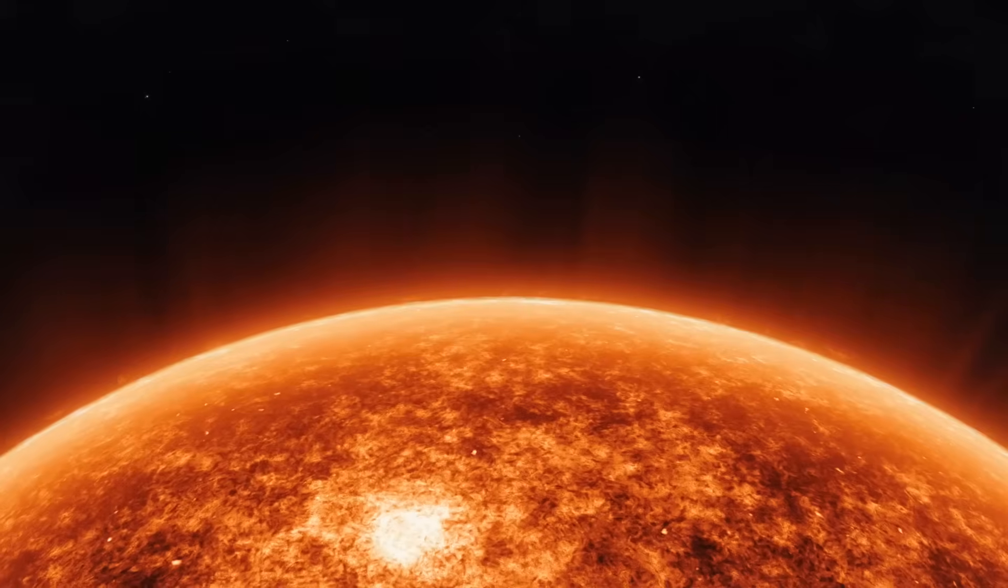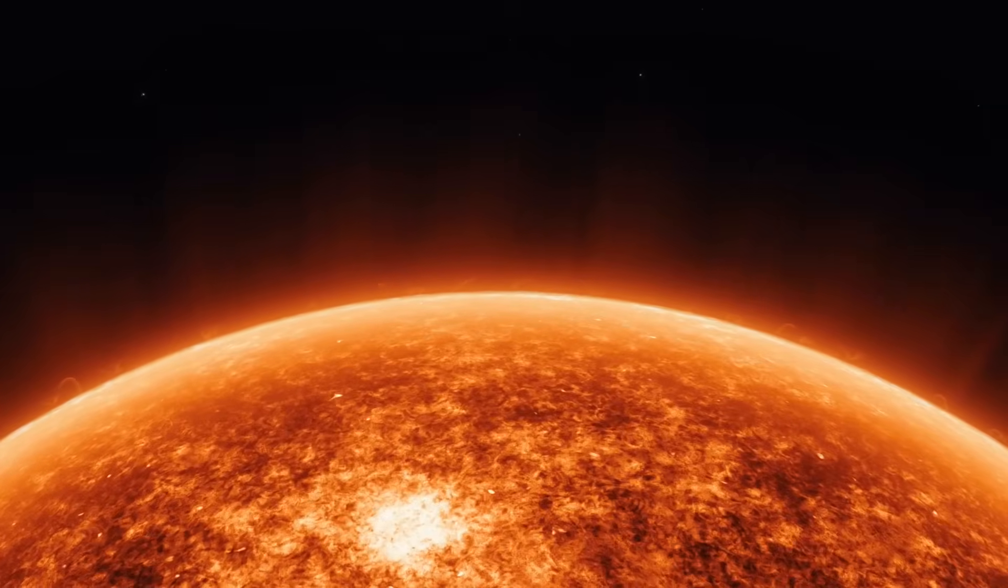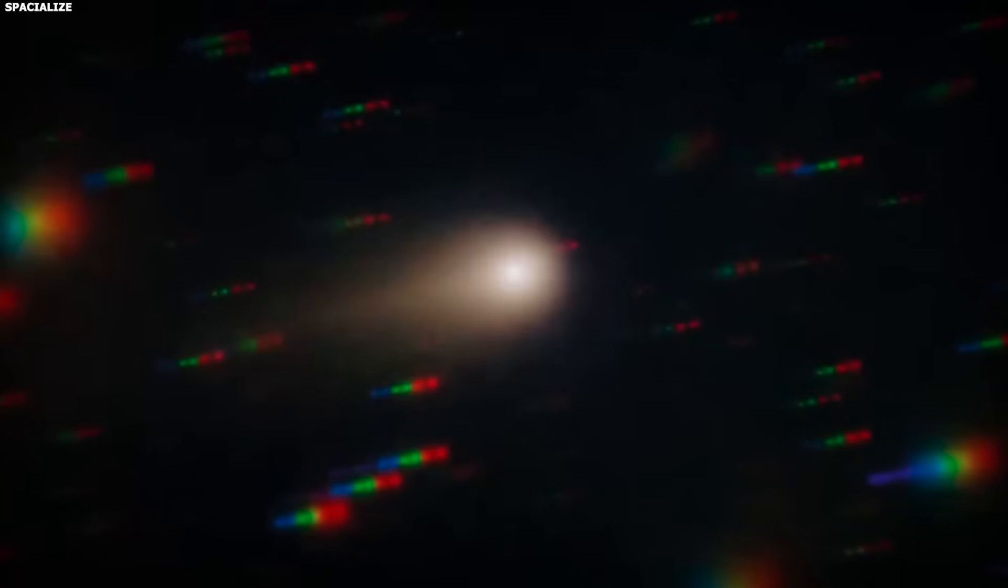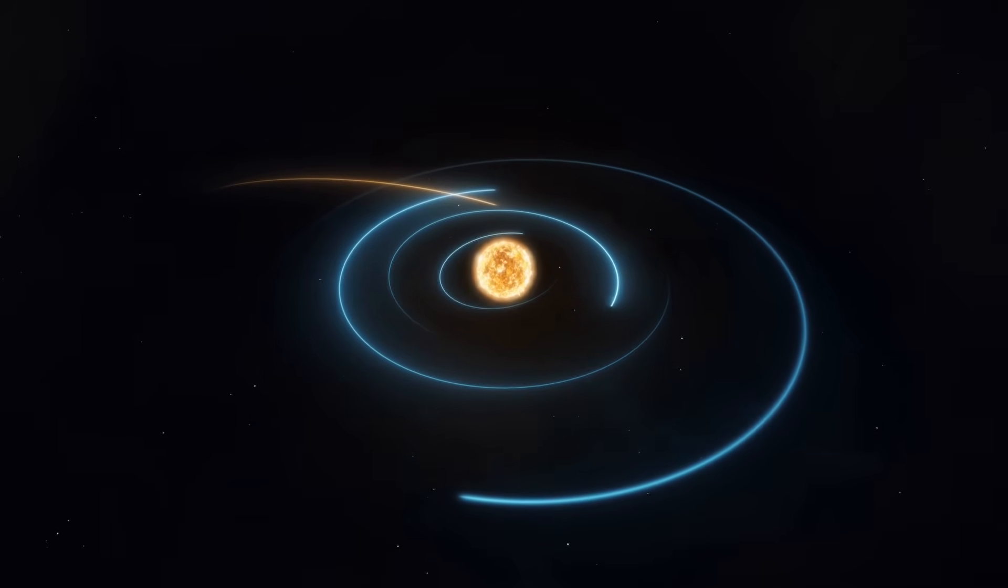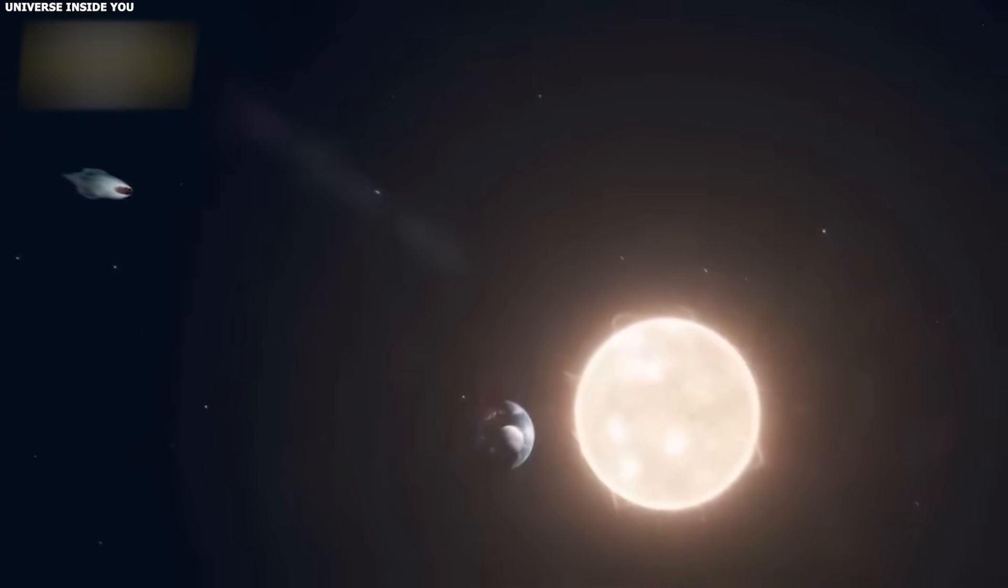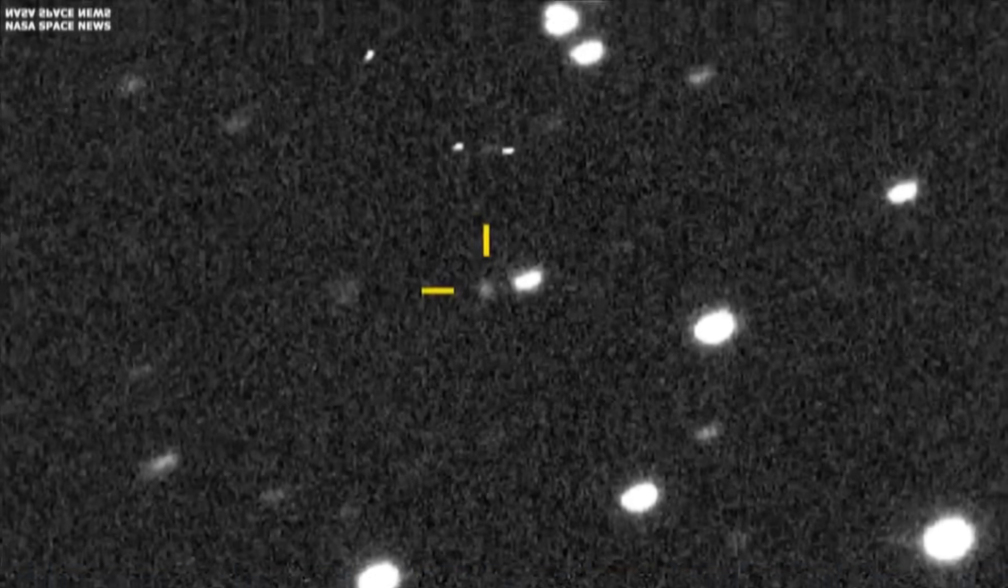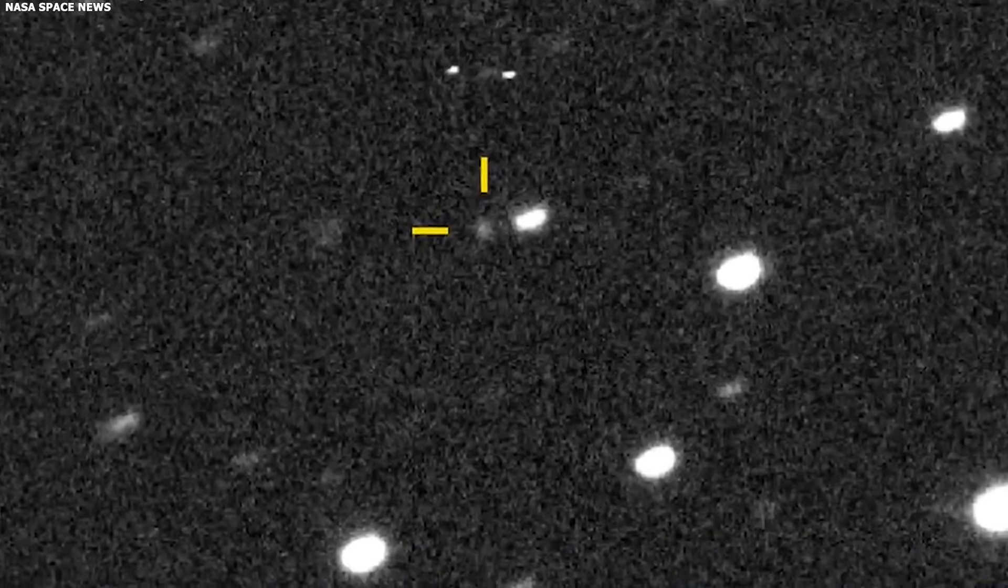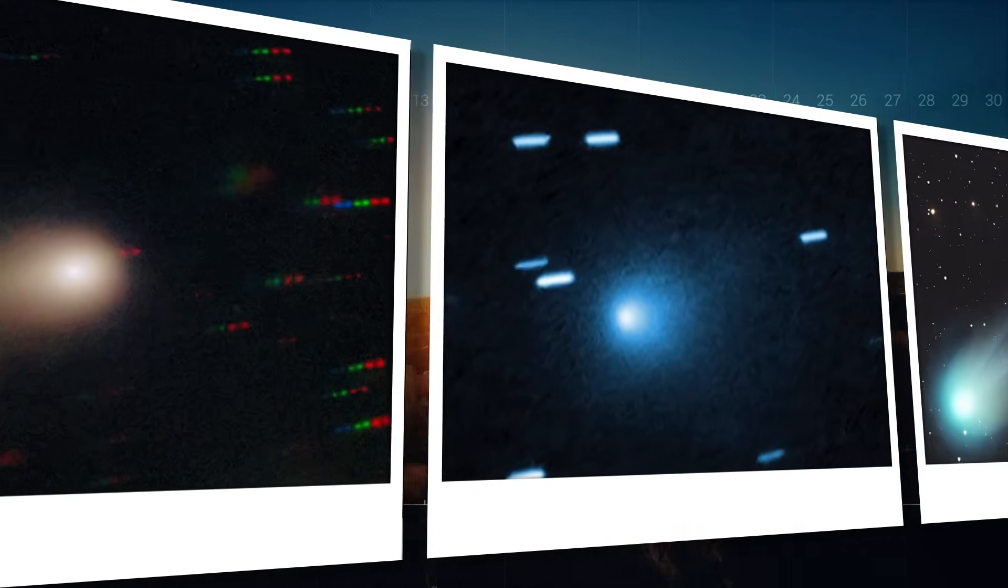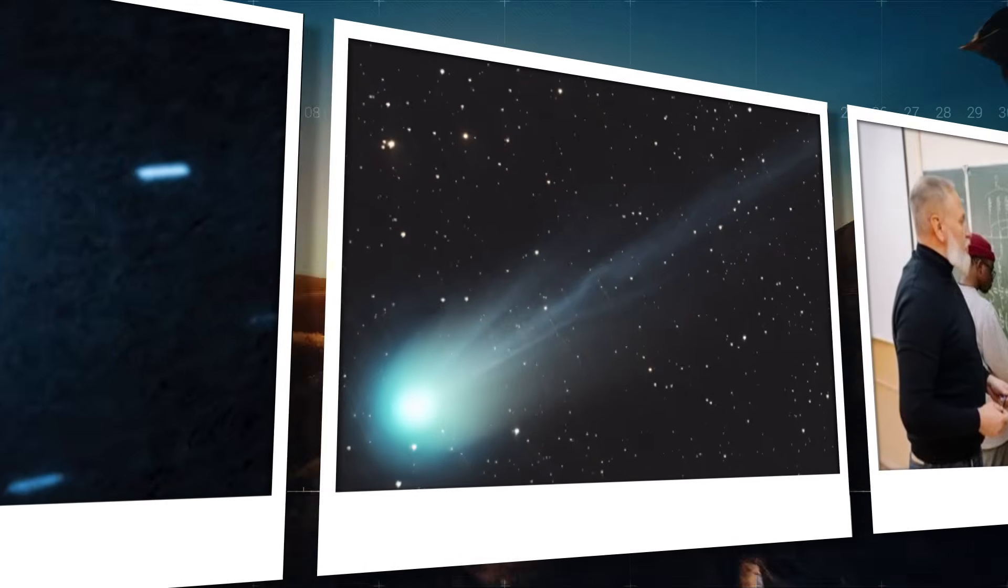And the latest images show something that shouldn't be possible. Look at this tail. It's pointing toward the sun, not away from it, toward it. Every other comet we've ever observed does the opposite. Solar wind and radiation pressure push their tails away from the sun. That's basic physics. We've known this for decades. But 3I Atlas has been doing this for five months straight. It did it in July when it was approaching the sun. It's still doing it now as it's leaving the sun. So what's going on?